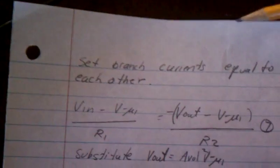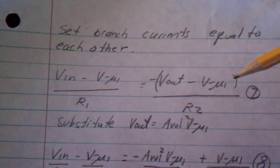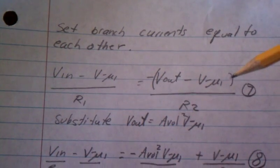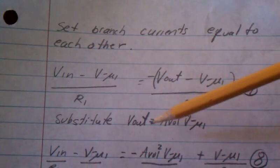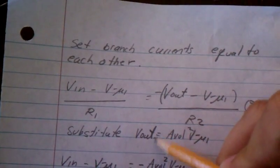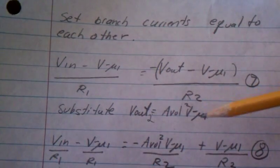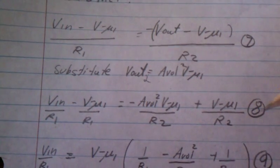We set the branch currents equal to each other, then we substitute V_out2 equals open loop gain squared times V_minus U1 into equation seven. We get this relationship.